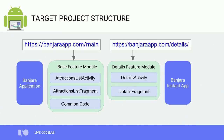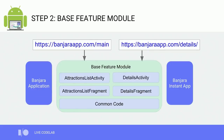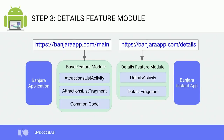The base feature module would contain the attractions list and the common code, and the details feature module would have the details experience. Remember, the base module is always loaded, so the details feature module only needs the additional code. This is our target project structure — we'll get to it in three steps. Step one: introduce URL entry points using the App Links Assistant. Step two: take the existing application module and make it a single base feature module, then introduce an Instant App module and an application module. Step three: extract the details experience into its own module.